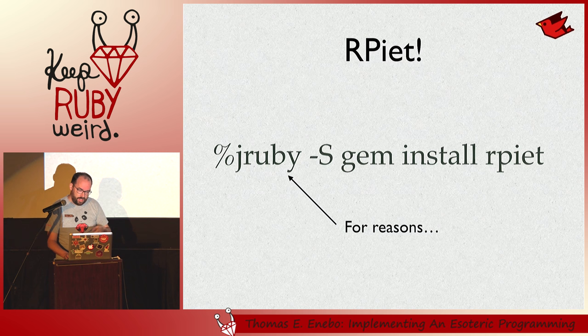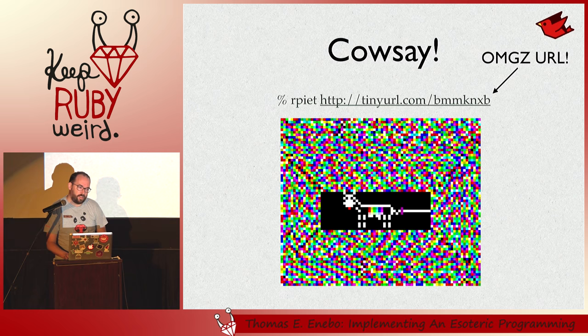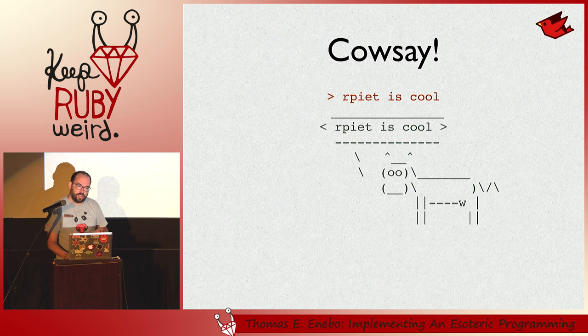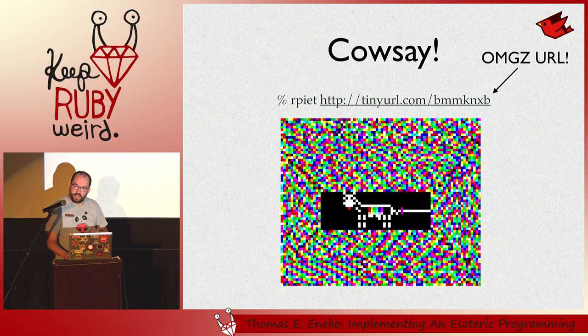So I made RPiet — it's a gem. I just realized this morning that I haven't actually re-released it since I did all this work, so I'll try to do that afterwards. Here's an example program, cowsay. With RPiet, you can just say download this image off the internet and execute it, which is pretty cool. When you execute this program, you get a prompt, you can type something in, and the cow repeats it in full ASCII glory.